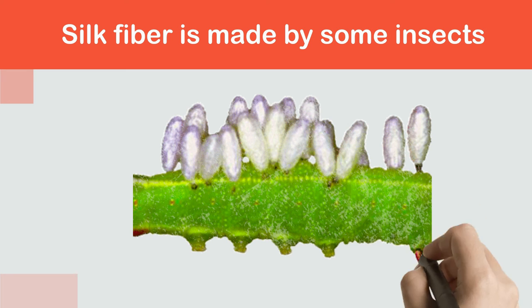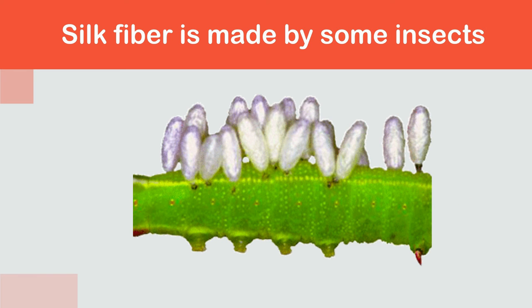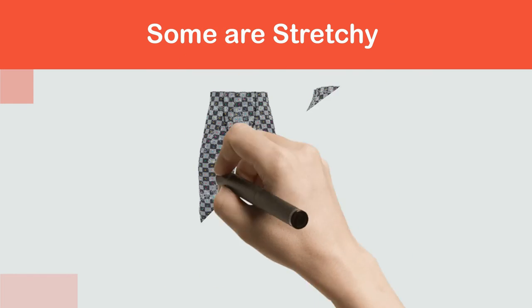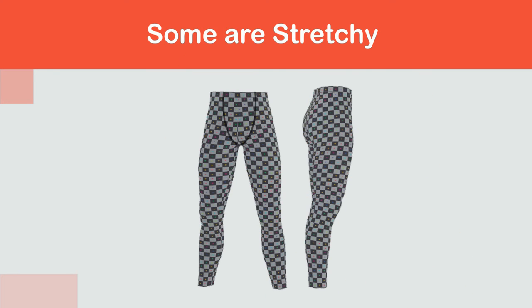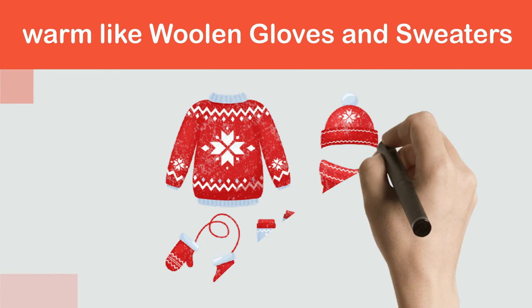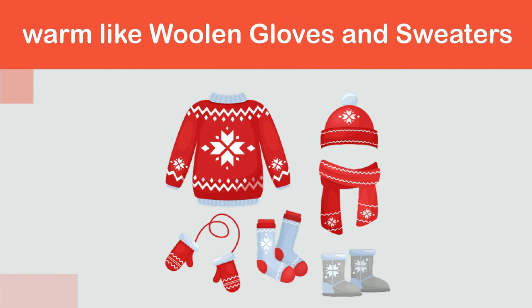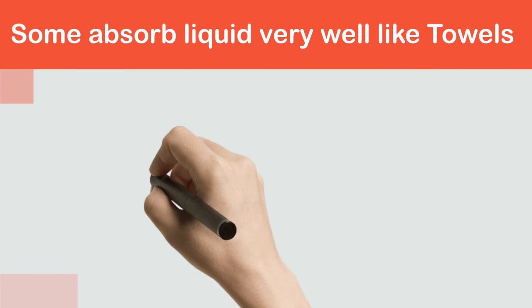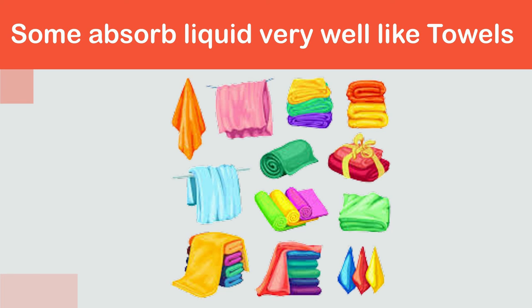There are many different fabrics. Some are silky while others are rough. Some are stretchy, for example tights. Some keep you warm, like woolen gloves and sweaters. Some absorb liquid very well, like towels.